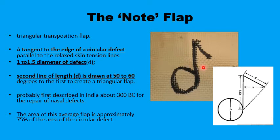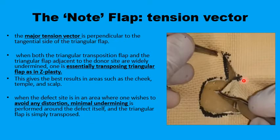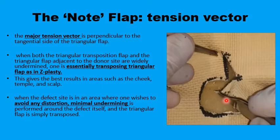The flap itself is triangular in shape and can be transposed to fill up the defect because it measures about three-quarters of the area of the defect, so with a little stretch it can fill it up. The donor site can be closed primarily with minimal tension. Once the triangular flap is raised, it can be mobilized and transposed to fill the circular defect, with some undermining required to facilitate mobilization and stretching.